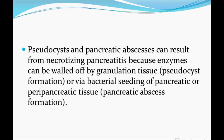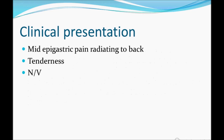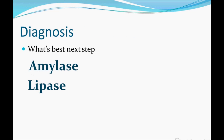Clinical presentation: the patient comes with mid-epigastric pain radiating to the back — it could also be aortic pain. There is tenderness, and history of either drug intake or alcoholism. On examination: tenderness, nausea, and vomiting may be associated. If you suspect acute pancreatitis, how do you proceed?